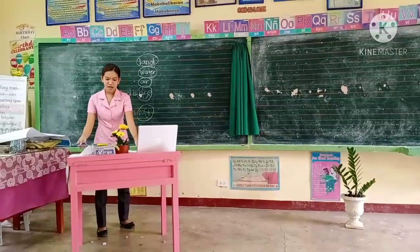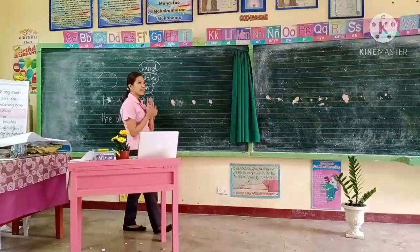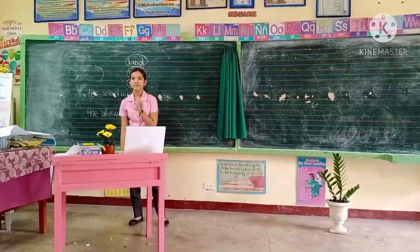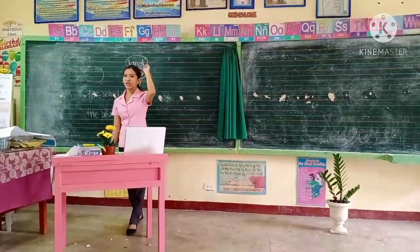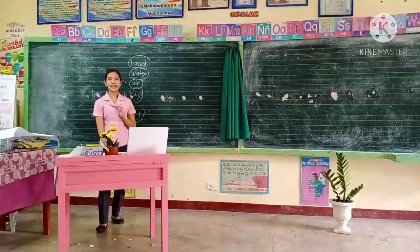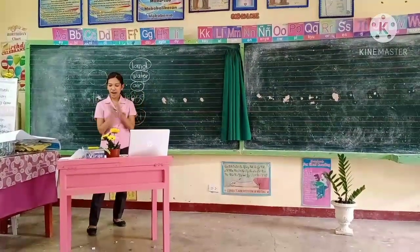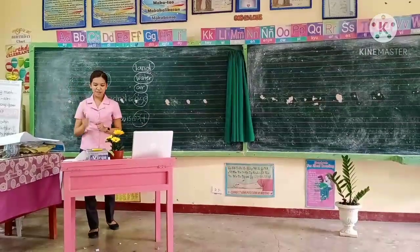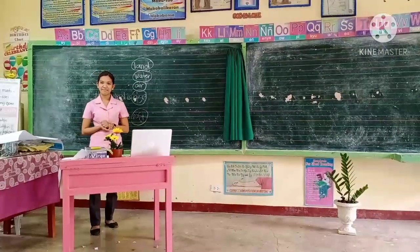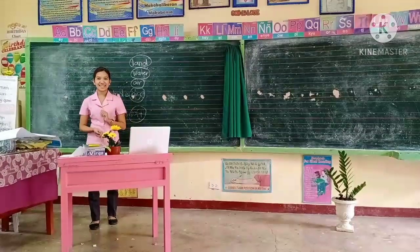At this moment, I want you to look around the classroom — what is inside and what is on the outside? What do you see? A plant, the students, the trees, the table. So, what do you think is our lesson for today? Our lesson for today is all about living and non-living things.